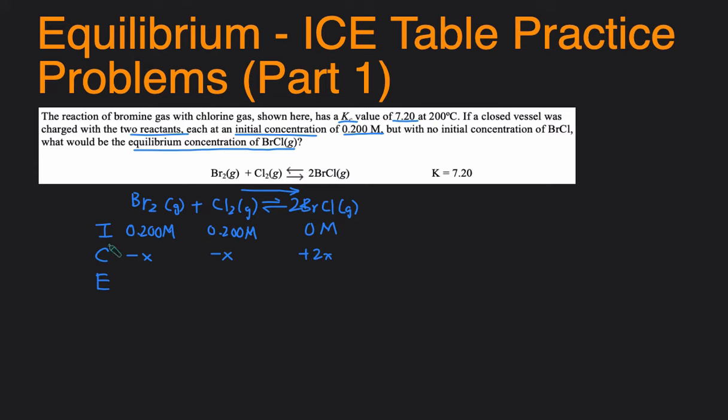And then the E line is just the sum of the I and C line. You can think of this as just these two lines add together and that will give you the E line. So this will be 0.200 minus X. This will be 0.200 minus X. And then this will just be 2X.